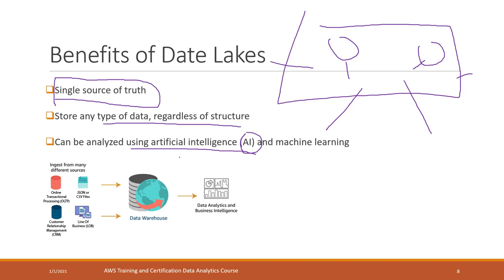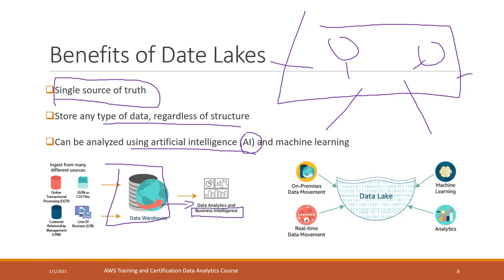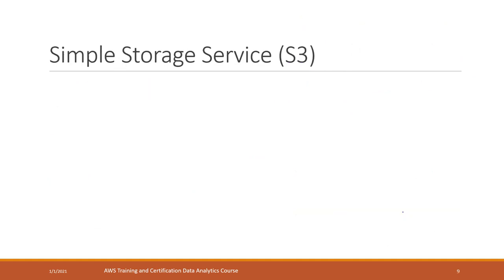Basically, the data lake and data warehouse are both data containers. A data warehouse can only store structured data and is best used for data visualization and BI tools. A data lake is more flexible — it can host data from anywhere and for any type of purpose, such as data analysis, machine learning, and AI.